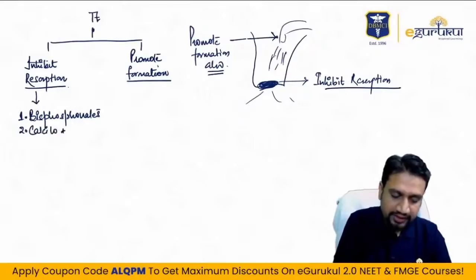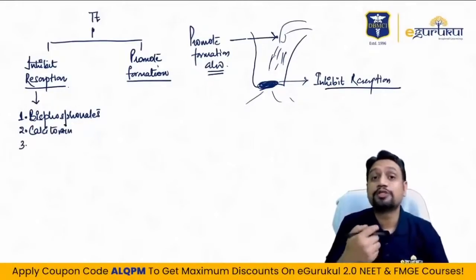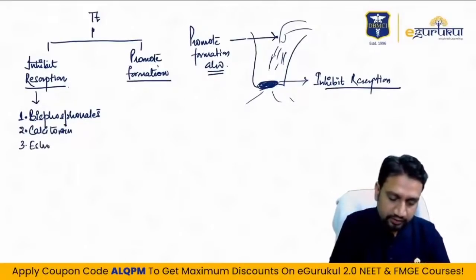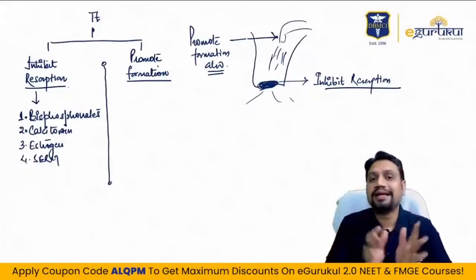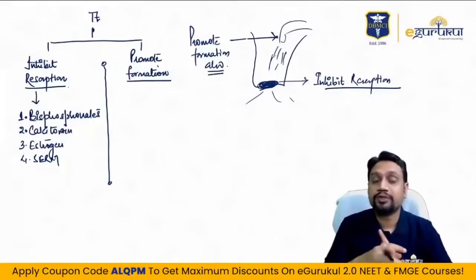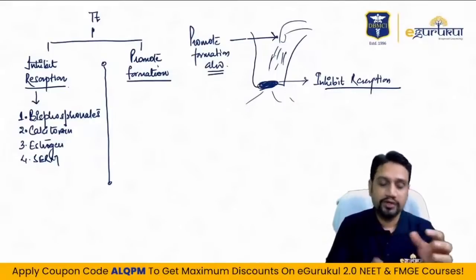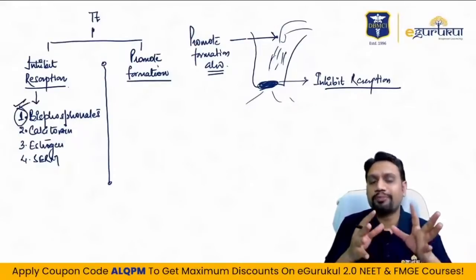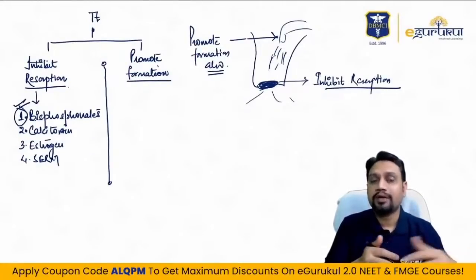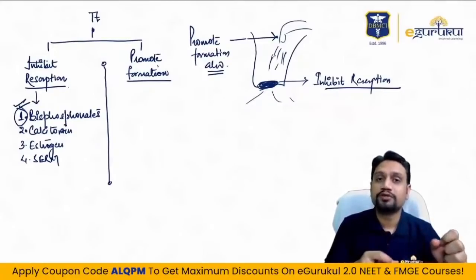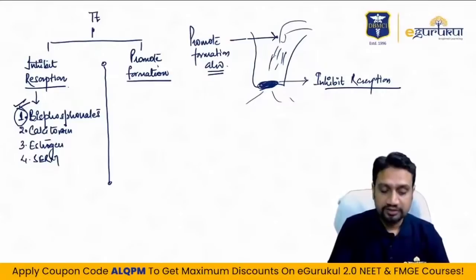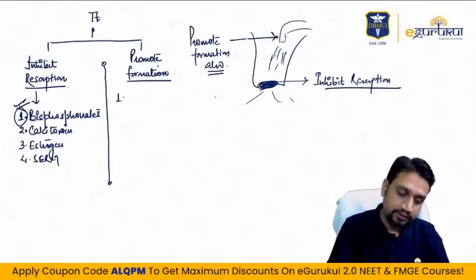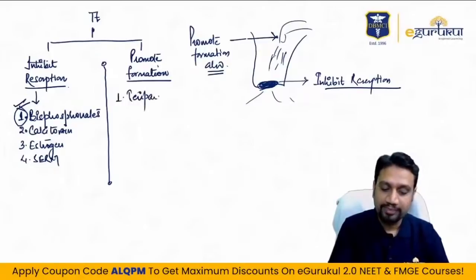Estrogens were preferred when bisphosphonates were not available, but bisphosphonates give much better results in any patient, male or female. Drugs which promote bone formation: teriparatide — a synthetic analog of parathyroid hormone — and calcium, along with vitamin D for absorption. Do not be in the habit of giving calcium to every patient without reason.